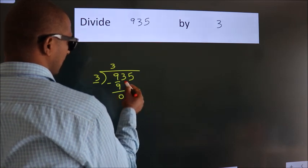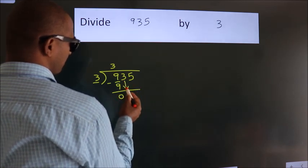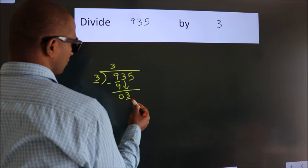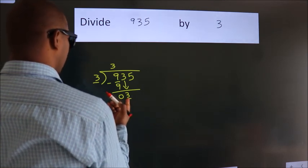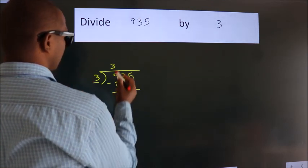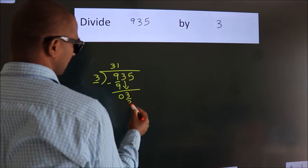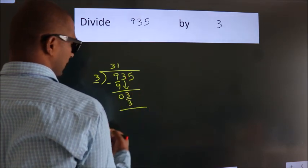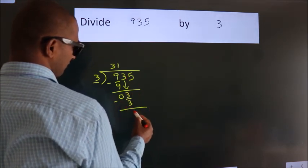After this, bring down the beside number, so 3 down. When do we get 3? In 3 table, 3 times 1 is 3. Now we subtract, we get 0.